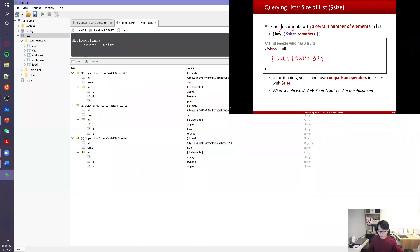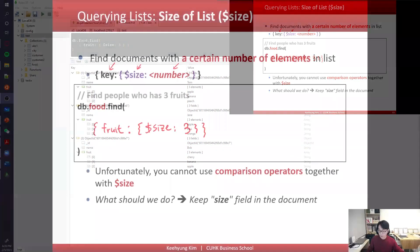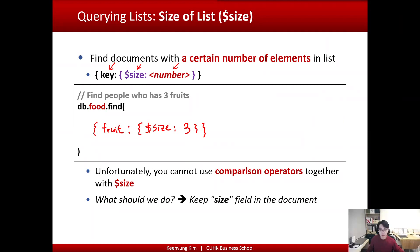The problem with the size operator in MongoDB is that you cannot use comparison operators together with it. If you want to find documents where a list field has less than three elements, you can't combine size with a comparison. One workaround is to keep a separate size field in the document, incrementing or decrementing it as elements are added or removed.